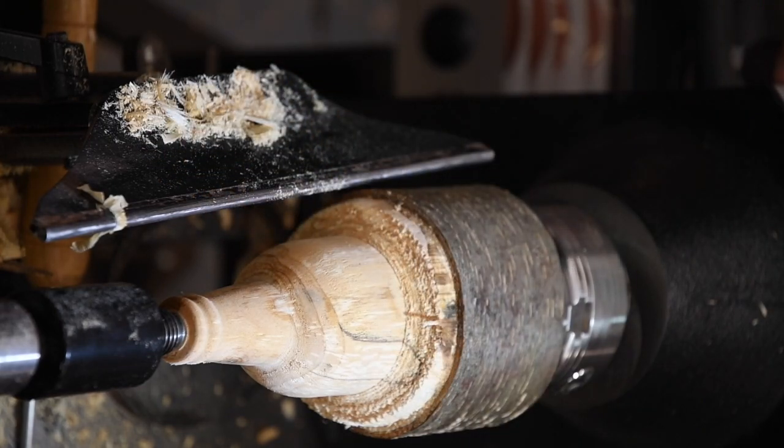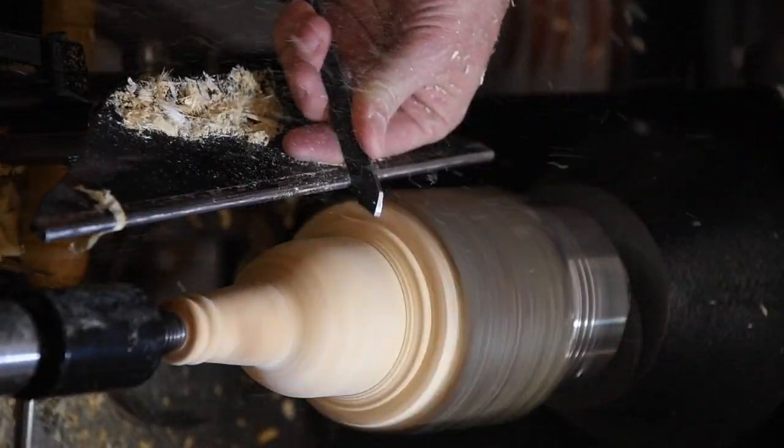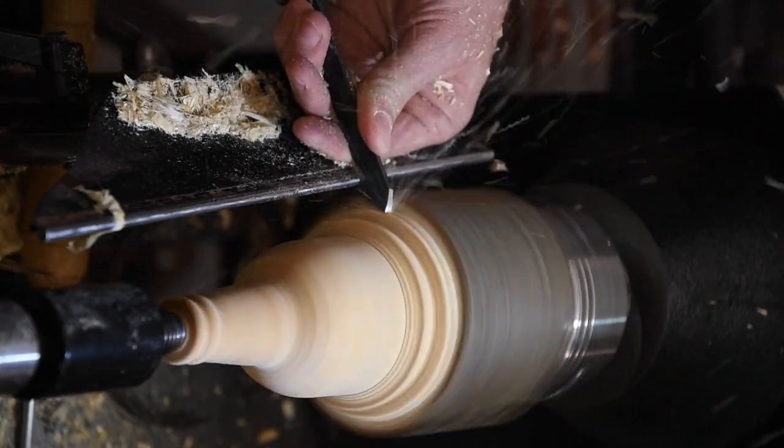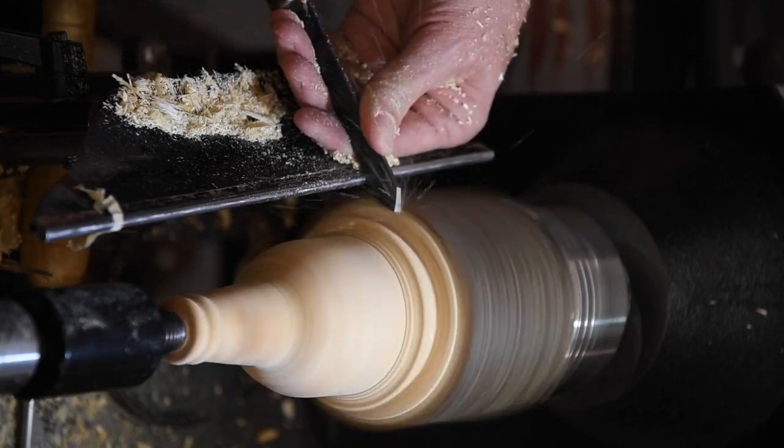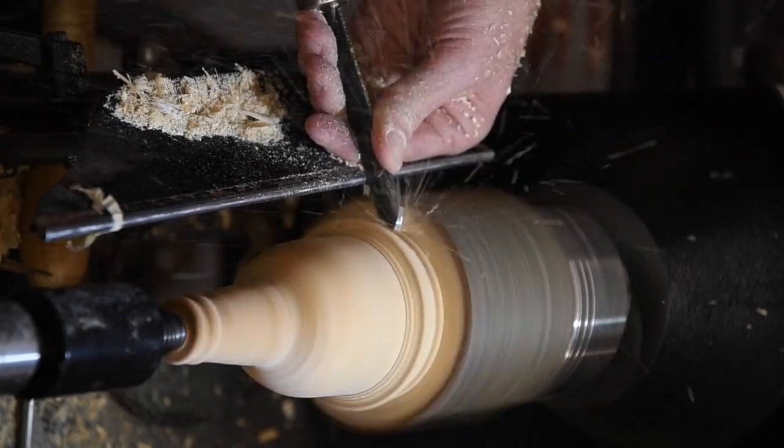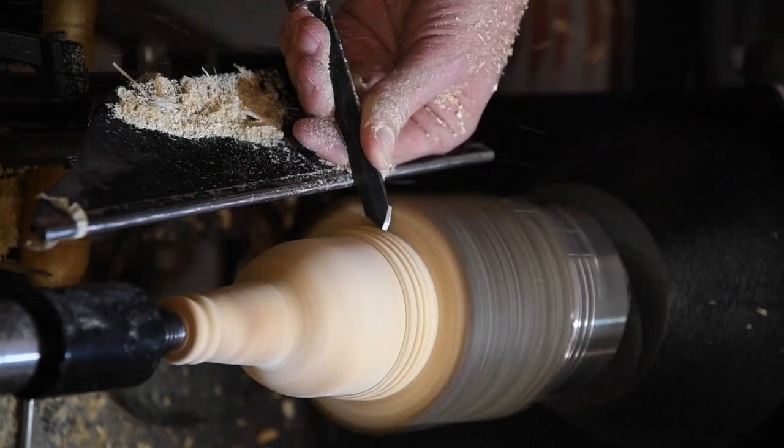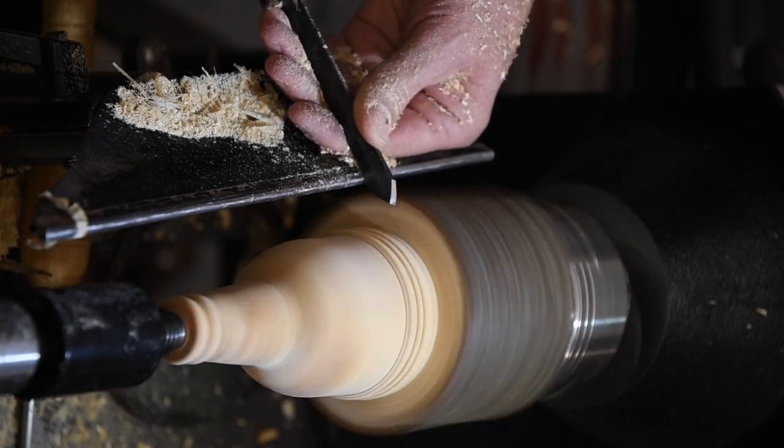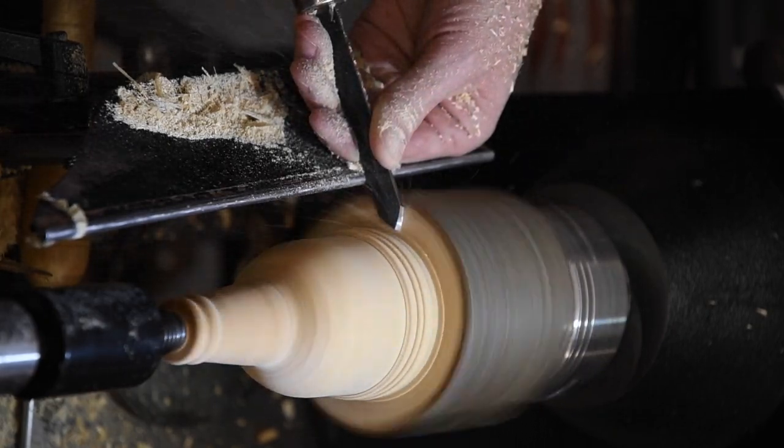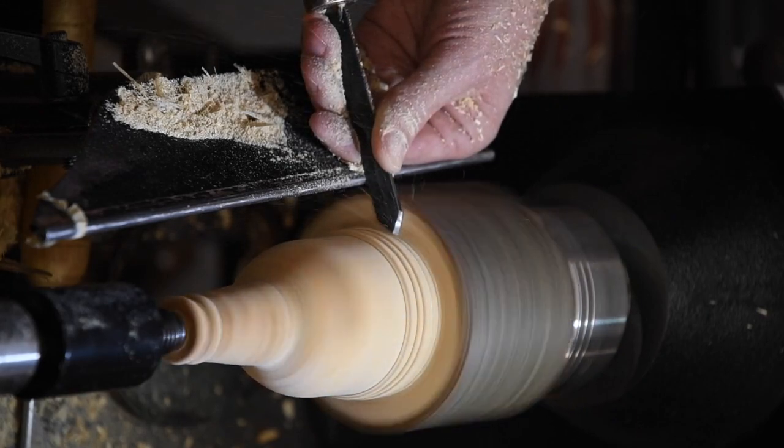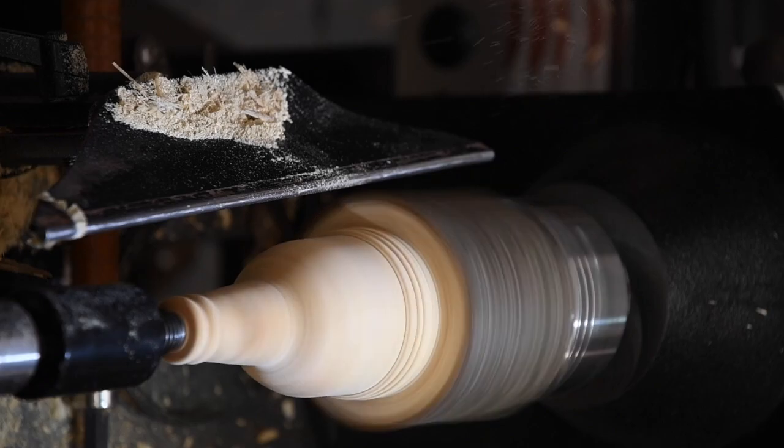To do this, I'm going to use a parting tool. It's good to take light, thin cuts. Now this wood is a little spalted, so it is likely to get some tear out. So the sharper the tool and the lighter the cut will help to ensure that we have less tear out.